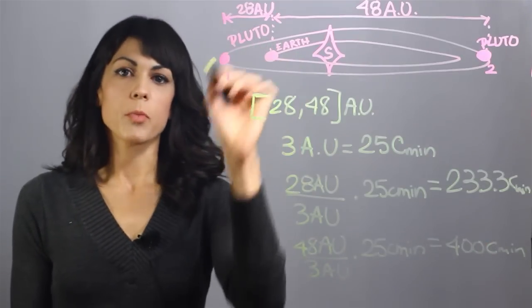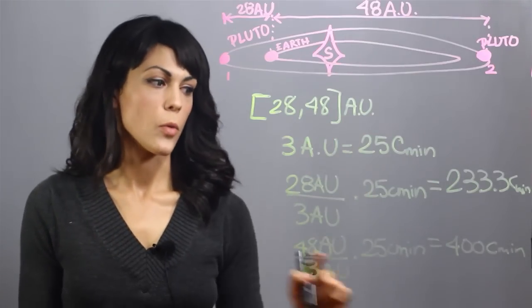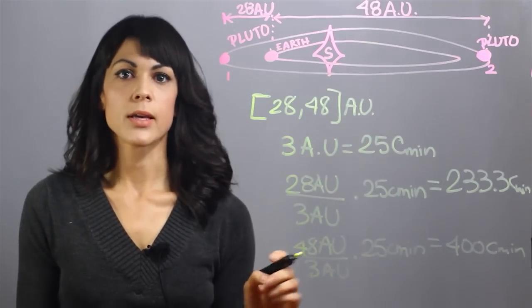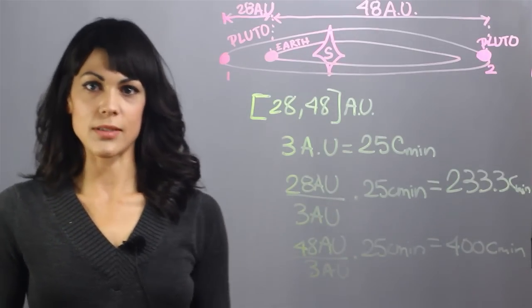So at the closest point, we are 233.3 light minutes away, and at its furthest point, we are 400 light minutes away. This is how far Pluto is from Earth in light minutes. My name is Aileen Perez and I'm an astrophysicist.